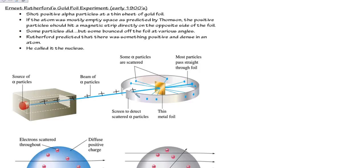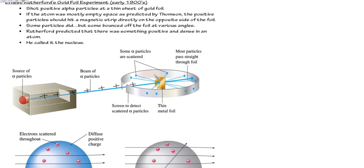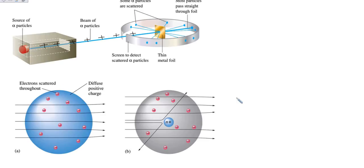Now, if this is correct, if this early model is correct, let's find this early model. Here it is. This was Thomson's model.